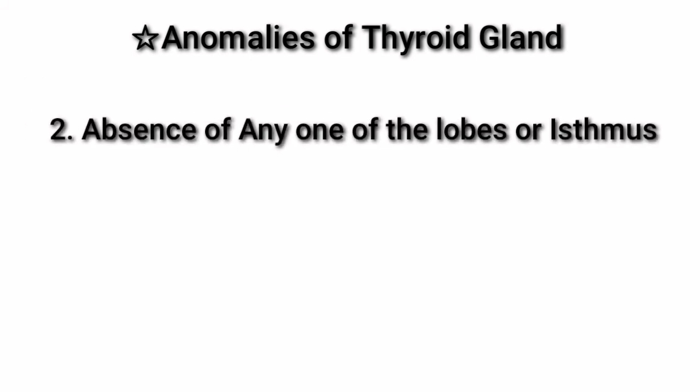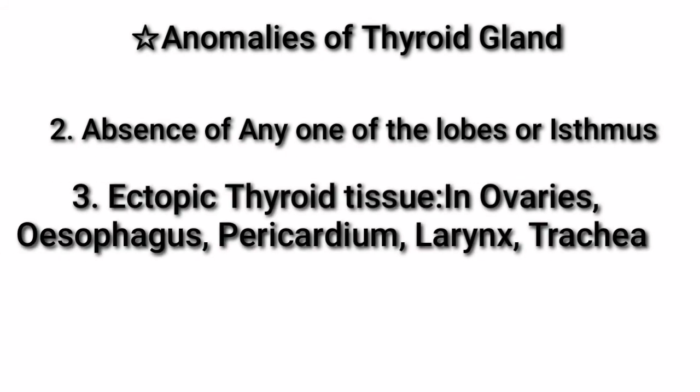Another anomaly is the absence of either the right lobe, left lobe, or even the isthmus of the thyroid gland. Another anomaly is ectopic thyroid tissue, meaning thyroid tissue is present in various locations other than the usual location. The thyroid tissue may be present in the ovaries, esophagus, pericardium, larynx, or trachea.